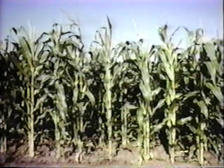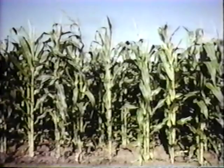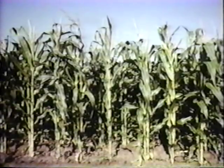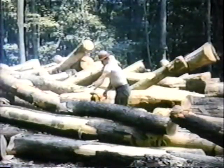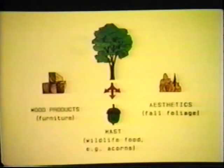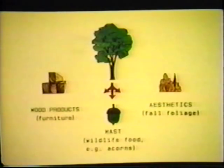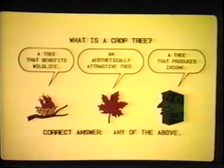Most people recognize a field of corn as a crop, but few think of the trees in the forest as a crop. A major difference is that corn requires only one growing season, but trees need many years to develop and mature. However, just as corn is cultured and harvested, so too are trees. It's important to realize that a crop tree can be any tree that has potential to produce a desired benefit. Crop trees can be grouped into three different categories: wildlife, aesthetic, and timber.